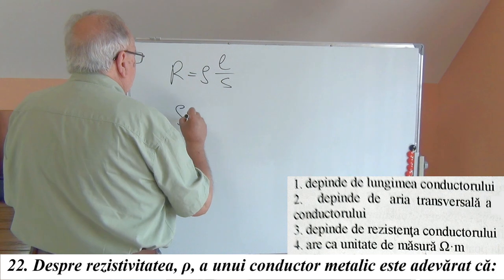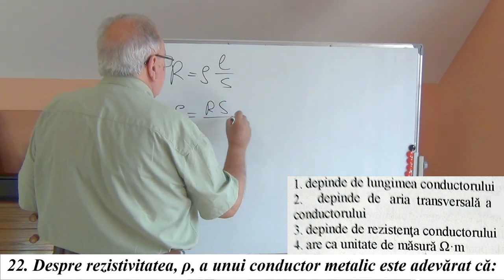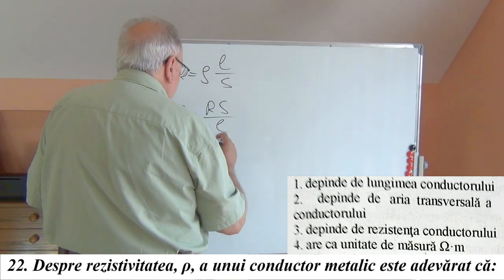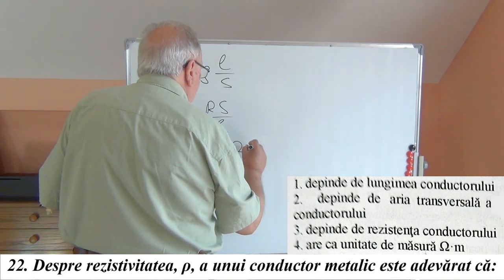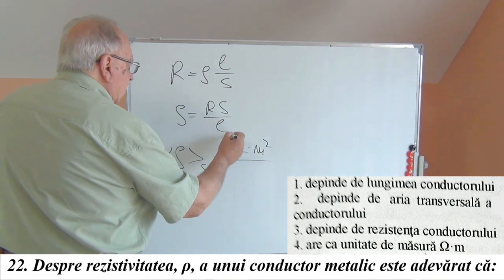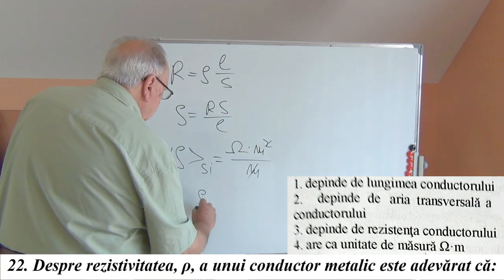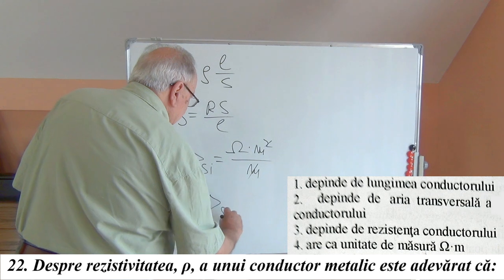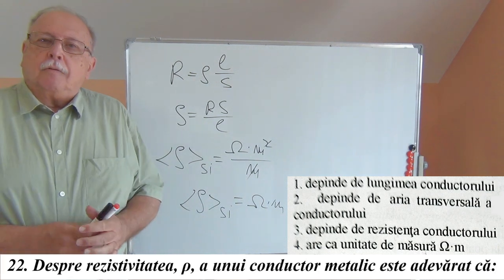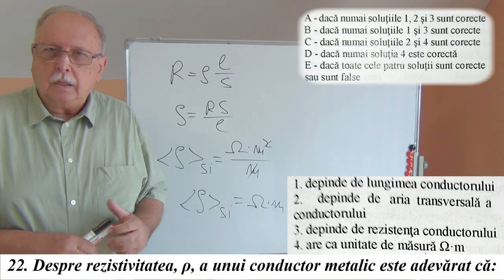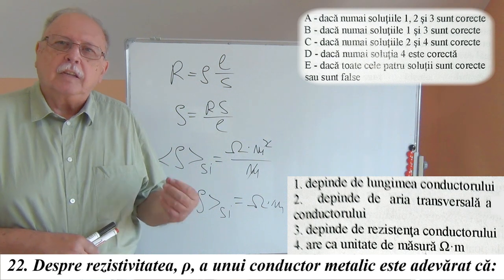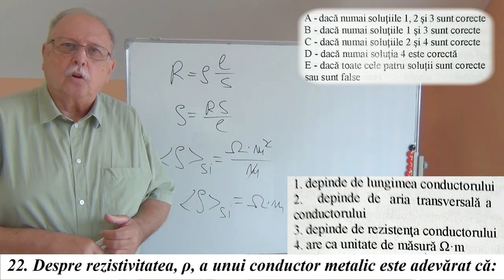Variant 4: the unit of resistivity is ohm·meter. From R = ρ·L/S, we get ρ = R·S/L, so its SI unit is Ω × m² / m = Ω·m. Indeed, the SI unit of resistivity is ohm·meter. So only variant 4 is true, and the answer must be given as D.